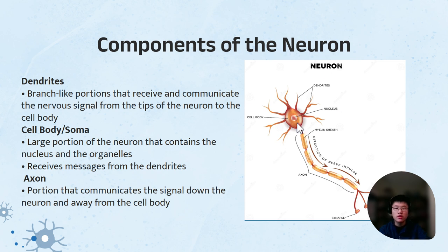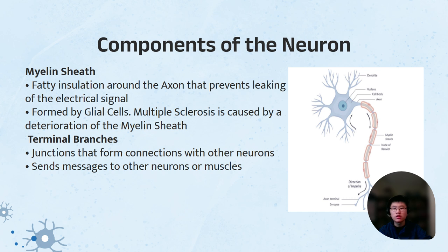The cell body, which is the primary circular part, is a large portion of the neuron containing the nucleus and the organelles. It receives messages from the dendrites. The axon, which is the long, linear part of the cell, is a portion that communicates the signal down the neuron and away from the cell body. Eventually, signals will be passed on to the terminal branches. The myelin sheath is a fatty insulation around the axon that prevents the electrical signal from leaking. It's formed by glial cells. Multiple sclerosis is caused by a deterioration of the myelin sheath.